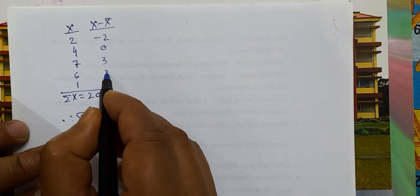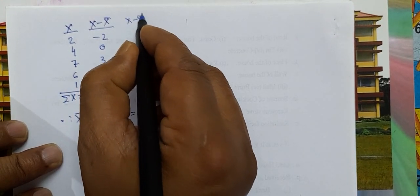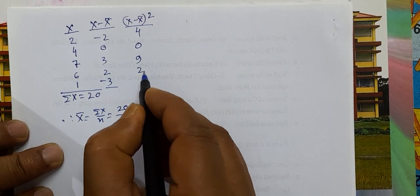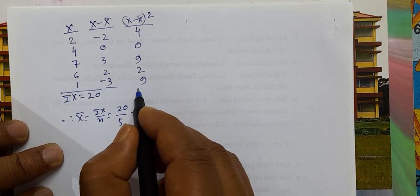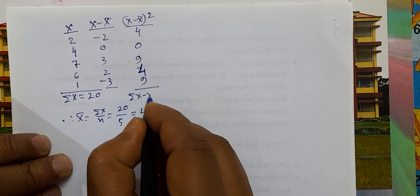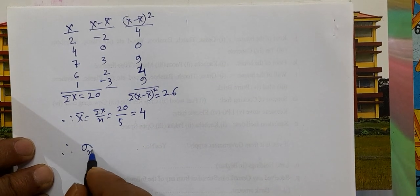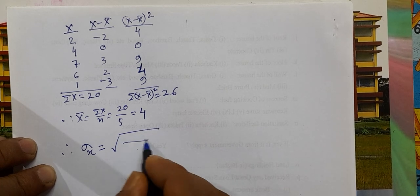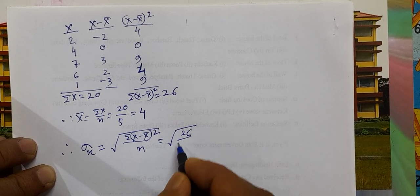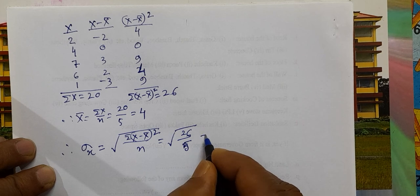The values of (x minus x-bar) squared are 4, 0, 9, 4, 9. So summation of (x minus x-bar) squared equals 26. Therefore, standard deviation of x equals square root of summation (x minus x-bar) squared by n, that is square root of 26 by 5, which equals 2.28.